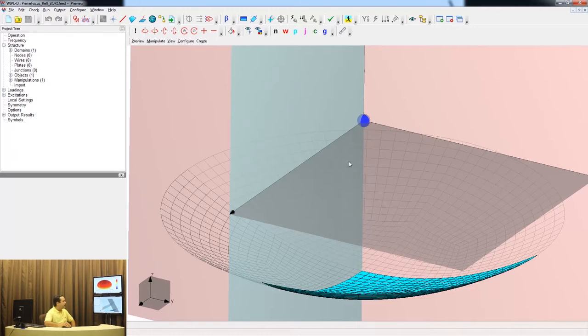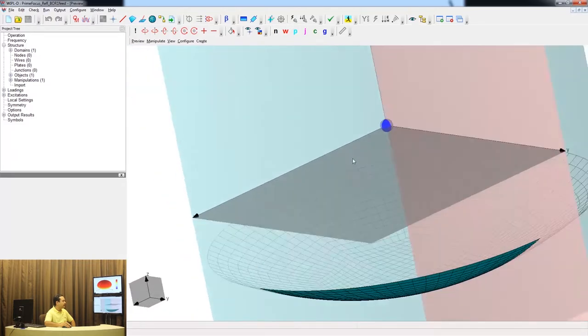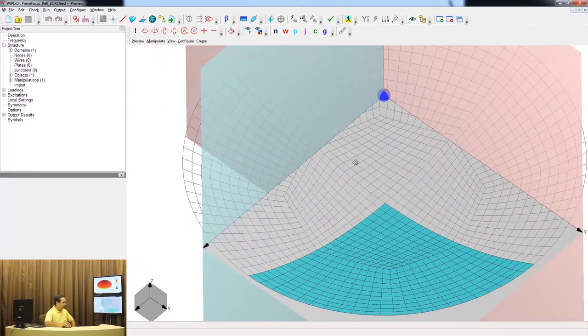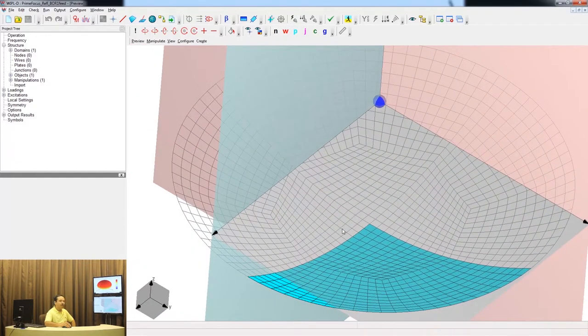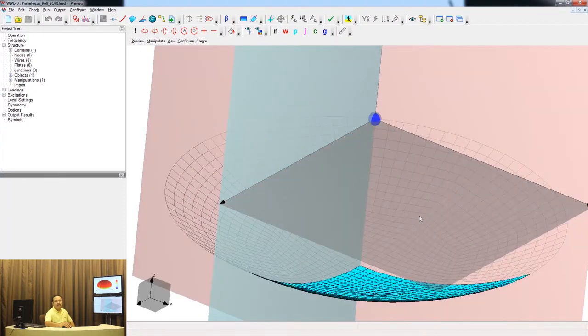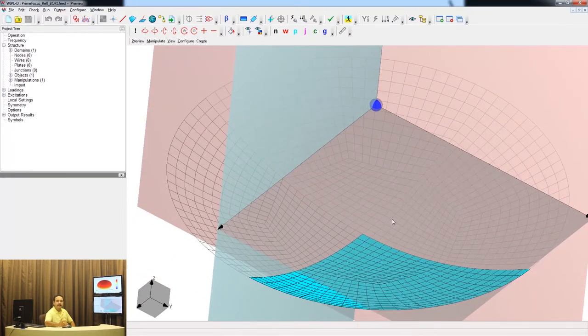This can be analyzed using method of moments. As you could see, only one-fourth of the reflector structure has been modeled. This is simply to save time because this is an ideal reflector and it has infinite symmetry planes, so it is possible to model one-fourth of the structure and still get reasonable results.